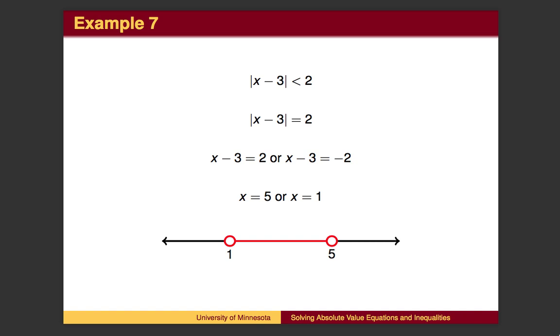If we solve absolute value of x minus 3 equals 2, we find that the two points which have a distance of 2 are located at 1 and 5. Since we want the points that are a distance less than 2 away from 3, we take the points between 1 and 5.